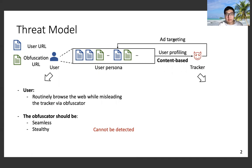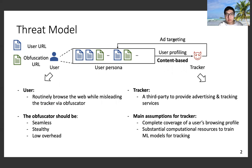The obfuscation should have low overhead in terms of minimizing the number of obfuscation URLs. We assume that the tracker is a third-party provider of advertising and tracking services. We make two main assumptions for the tracker: first, it should have complete coverage of a user's browsing profile; second, it should have substantial computation resources to train machine learning models for tracking.